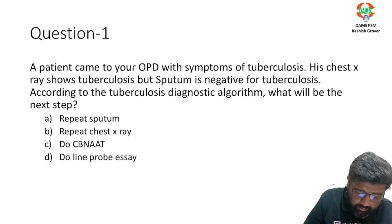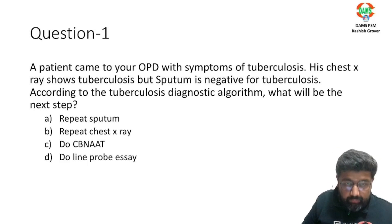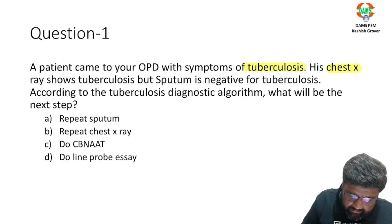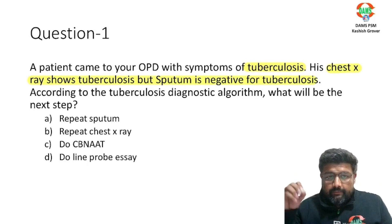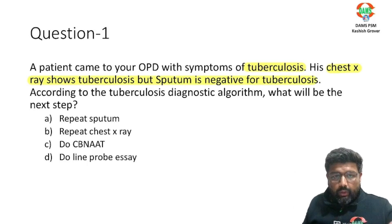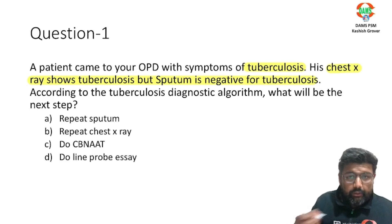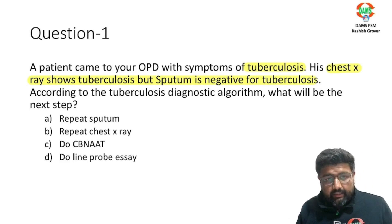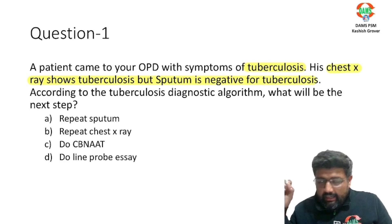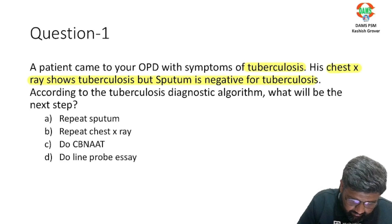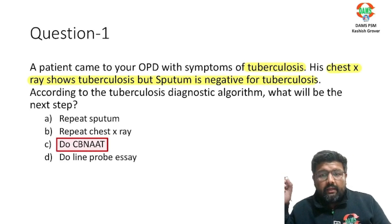Answer with me: a patient came to your OPD with symptoms of tuberculosis. Chest X-ray is positive but sputum is negative. What should you do — repeat sputum, repeat chest X-ray, or do a CBNAAT? According to the recent guidelines, the correct answer is CBNAAT.